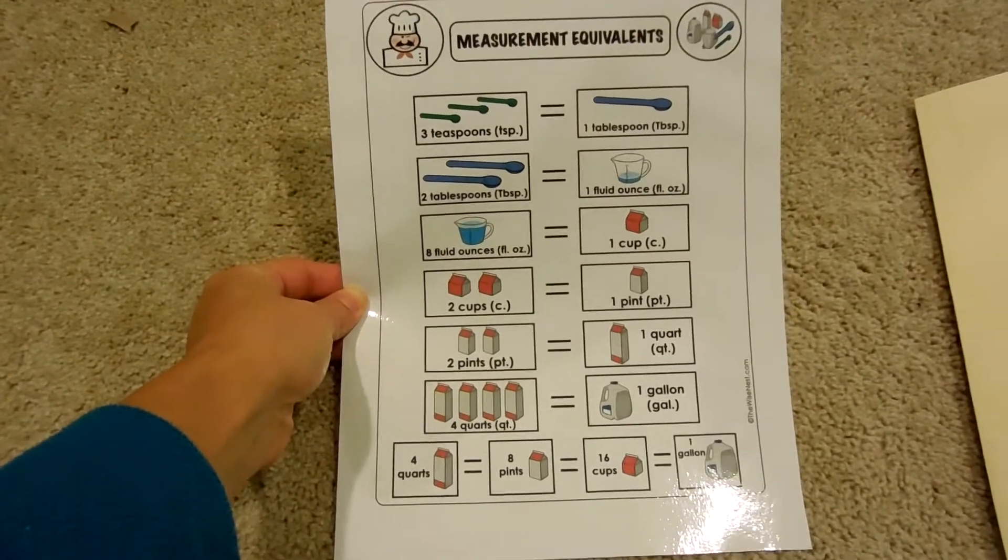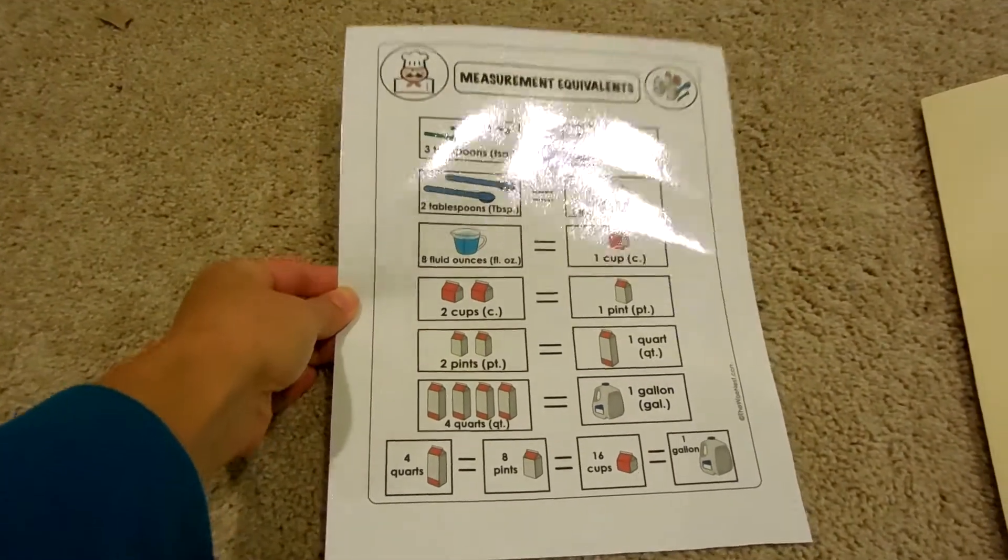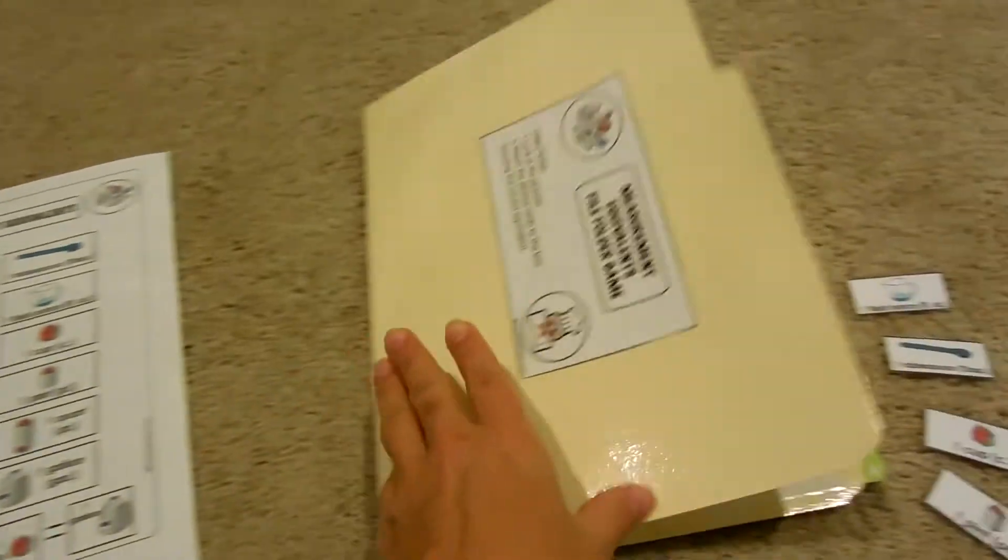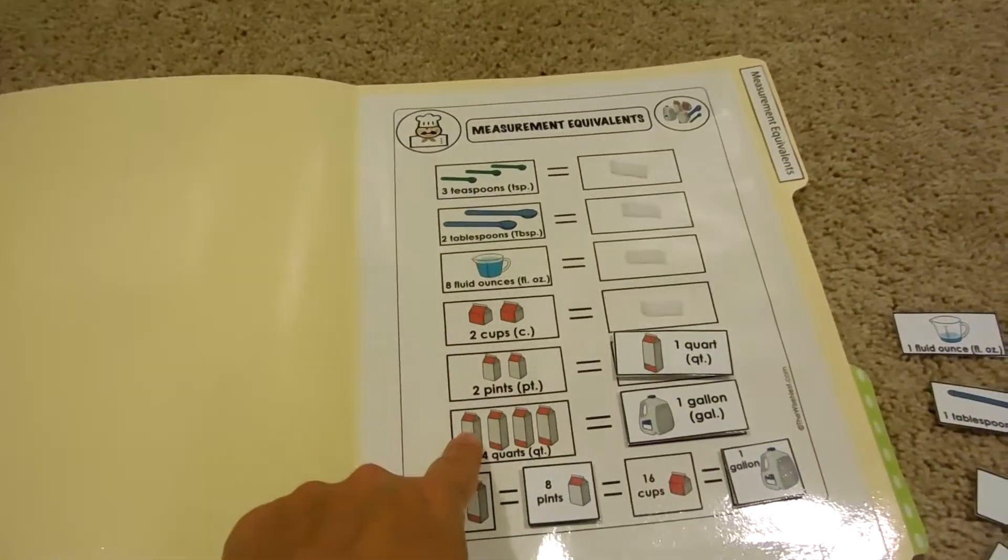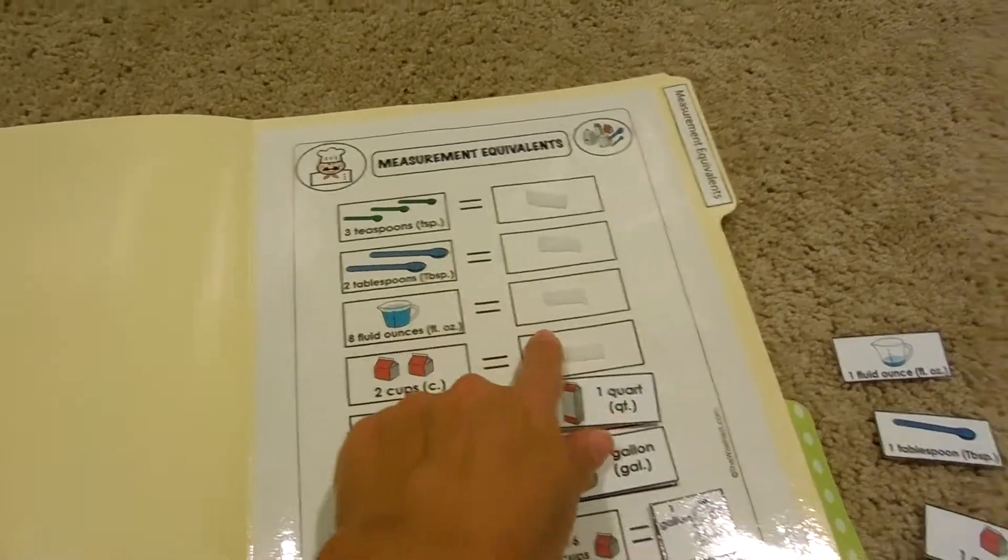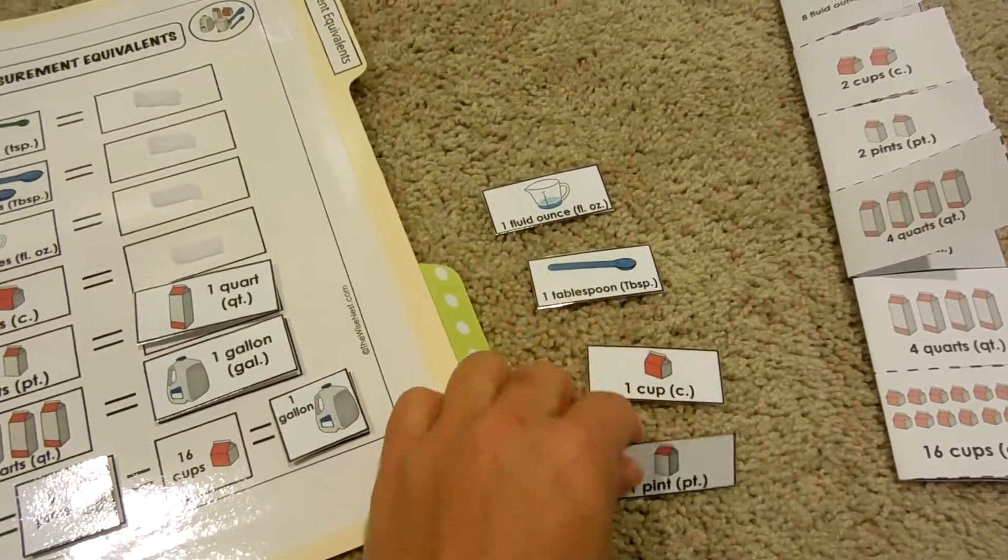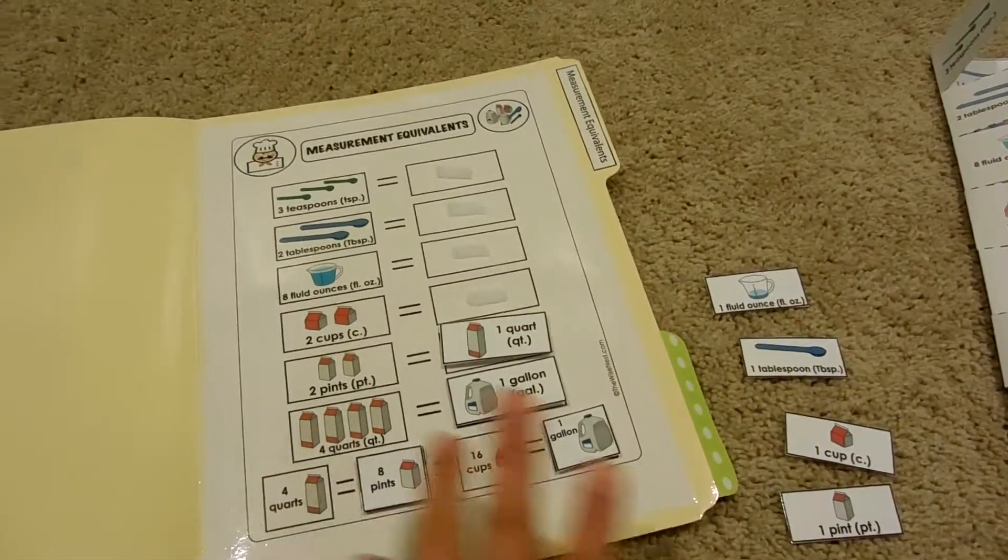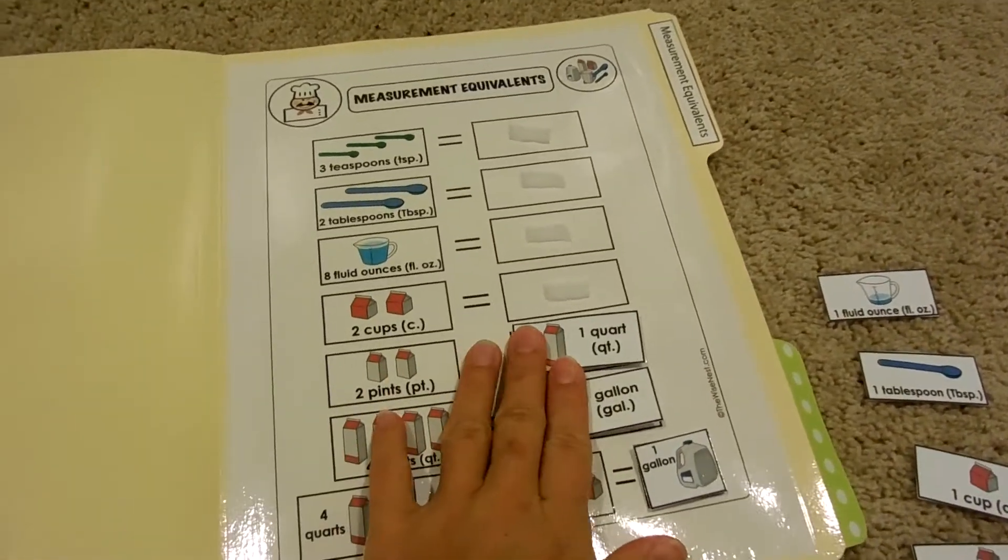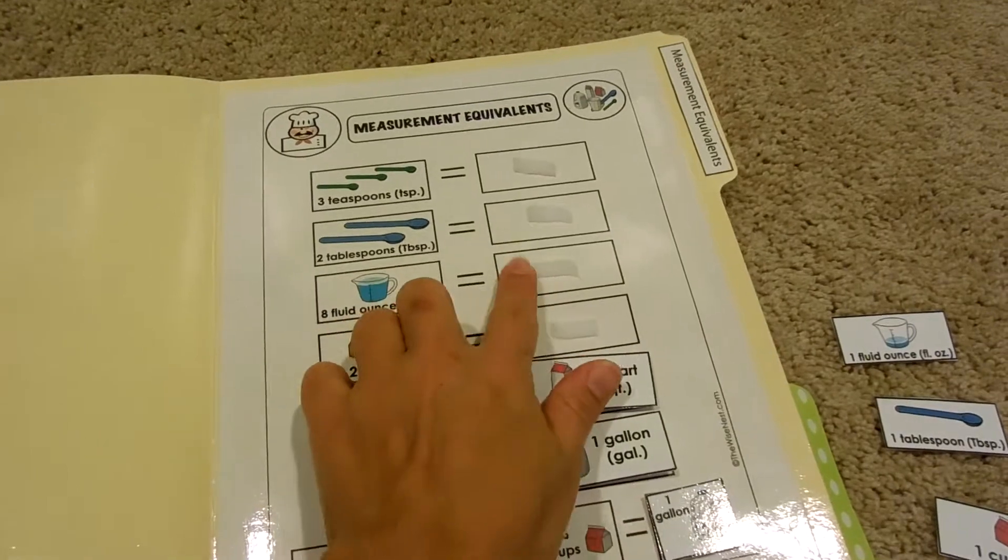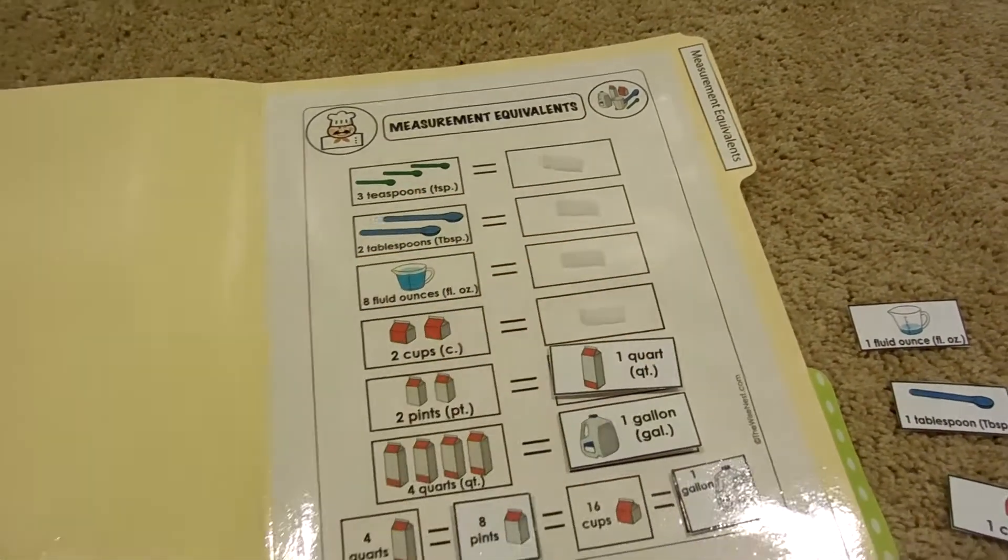Then you will find another file which will have just one side with the pictures and then the other one's blank, and you have the pictures to cut. So you can use this one as a cut and paste activity which you just give to your child and they'll cut it and glue the correct equivalent next to the picture in the empty box.